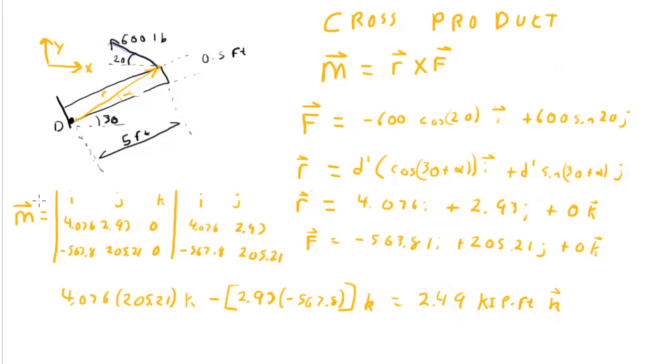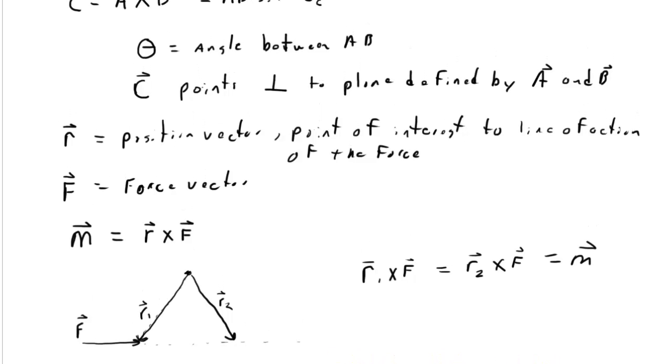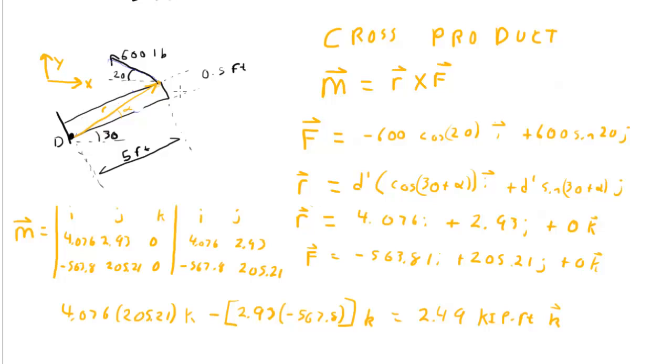So you see that the direction of the vector M comes out of the cross product automatically. When we did the scalar formulation, you would actually have to take your right hand, point your fingers in the R direction, and then curve them back around towards the force vector. And your thumb would point out of the screen, also in the k direction.